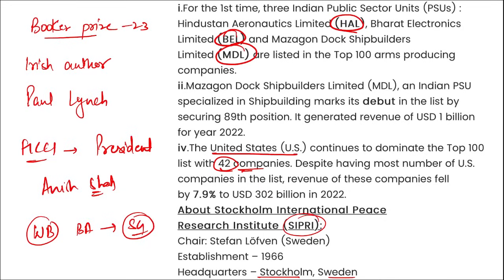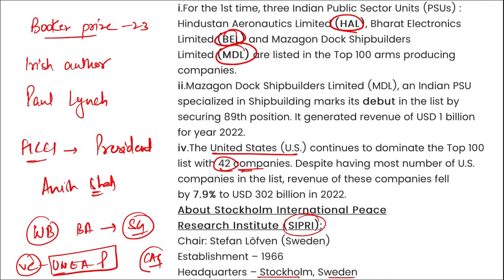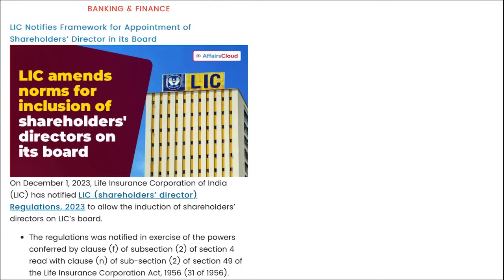फिर इसी के साथ साथ, अभी recently किन को elect किया गया as the vice chair of UN external auditors panel पर? UN के external auditor panel पर किन को vice chair appoint किया गया? वो रहेंगे हमारे CAG — Girish Chandra Murmu। Next।